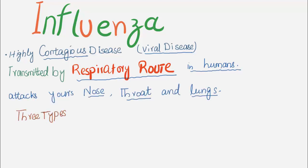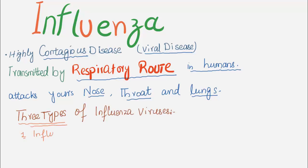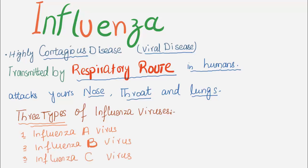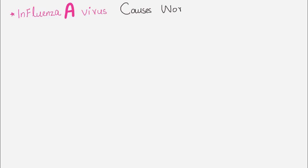There are three types of influenza viruses: Influenza A virus, Influenza B virus, and Influenza C virus. Influenza A virus causes worldwide epidemics or pandemics of influenza.